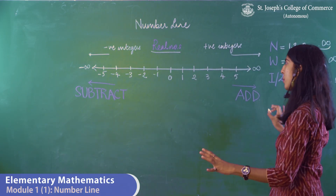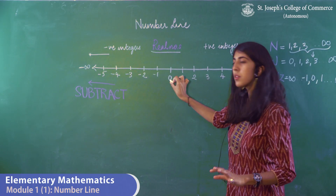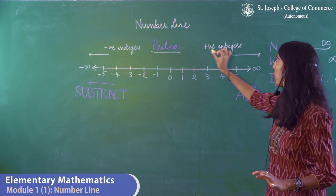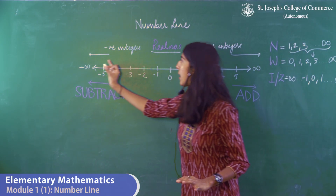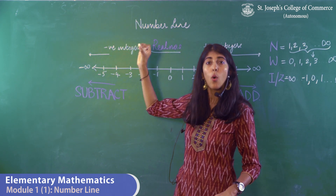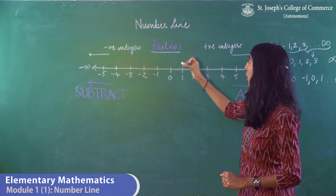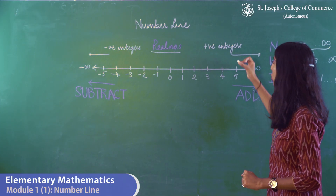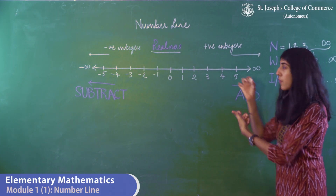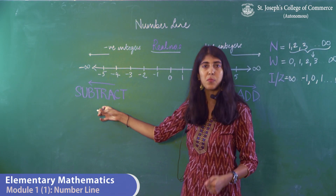Moving on to how the number line is represented. If you notice, 0 is in the middle. Towards the right-hand side, you have all positive integers, and towards the left-hand side, you have all negative integers. When you're solving, if you're moving along the number line towards the right-hand side, you need to add. And if you're moving along the number line towards the left-hand side, you need to subtract.